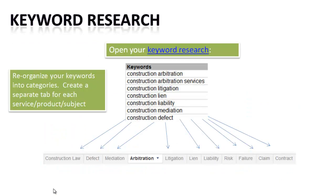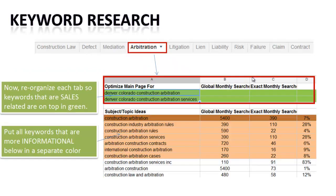Let's just get into that briefly to summarize what we learned. Initially we have our keyword research, and then in the tutorial about determining what sales pages we want built, we took our keyword research and reorganized it into categories and tabs at the bottom of our keyword research template. From there we reorganized each tab so the top was sales pages in green, and the bottom was subject ideas. For this tutorial we're not going to use the sales page keywords — we're going to use the subject idea keywords.